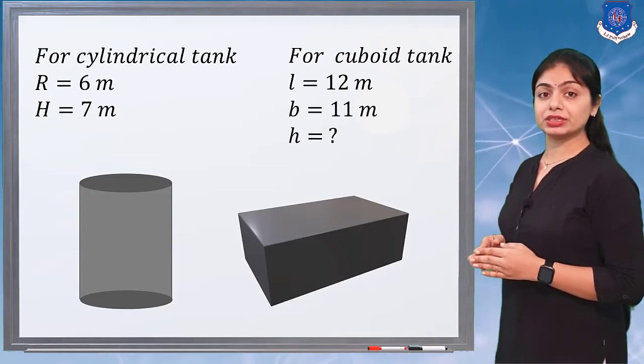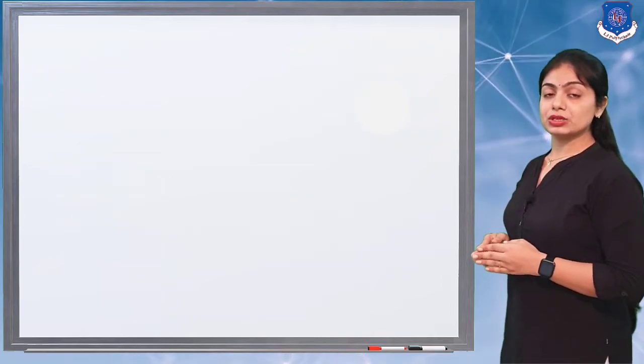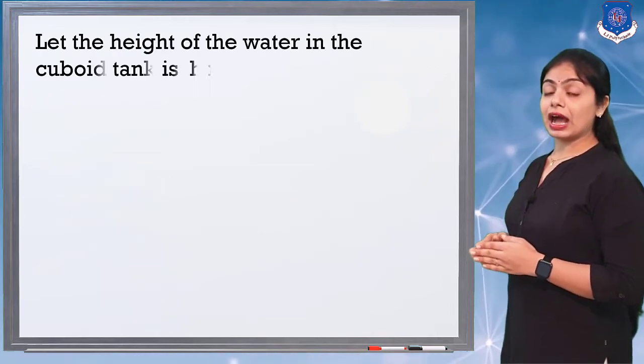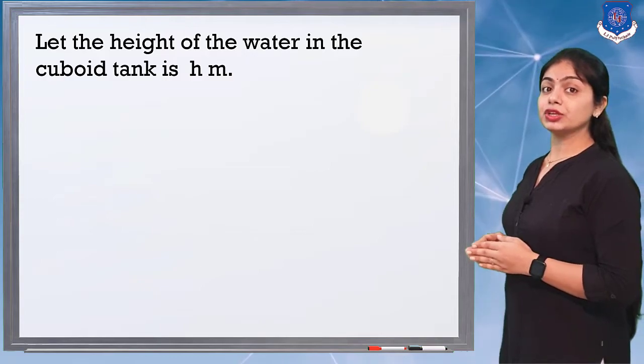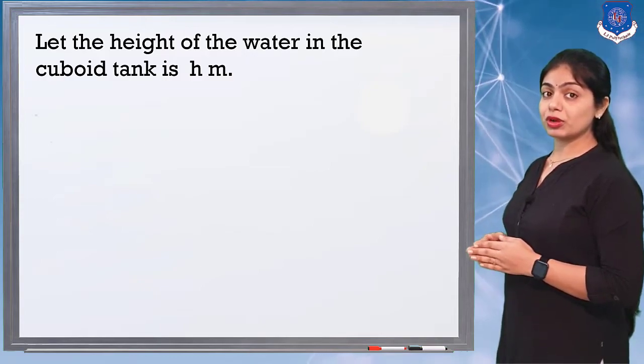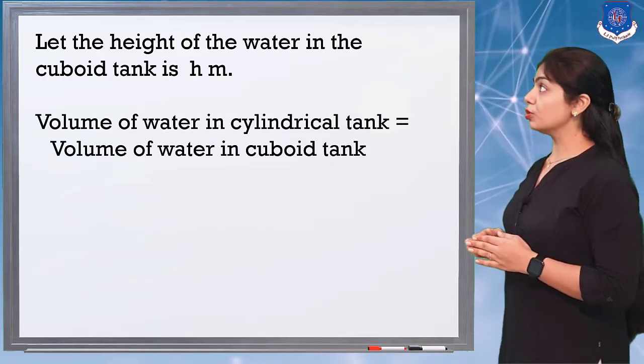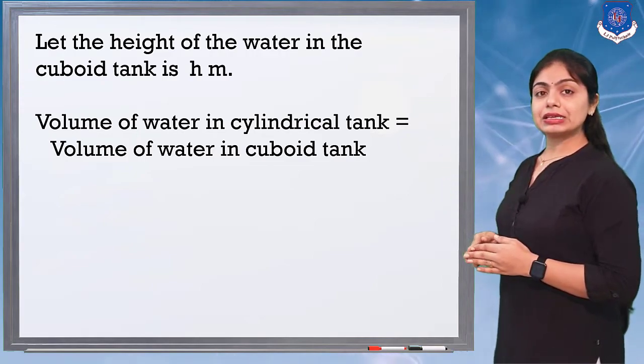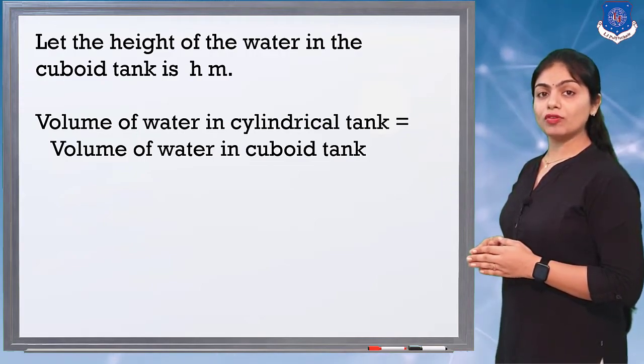We want to find the value of h, the height of water in the cuboid tank. First, we write that the volume of water in the cylindrical tank equals the volume of water in the cuboid tank.